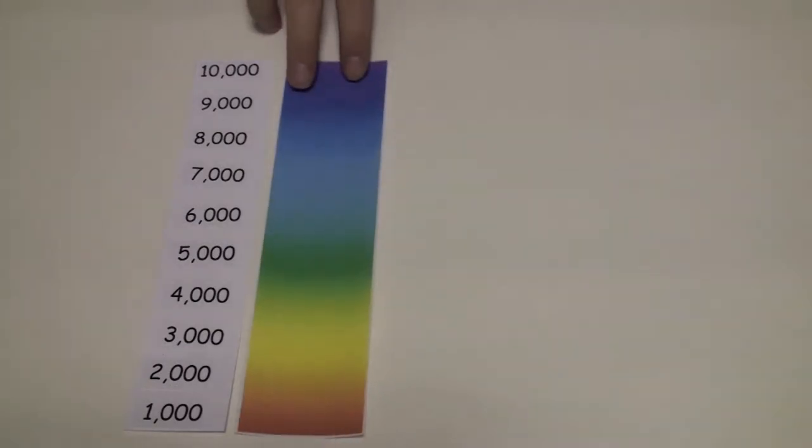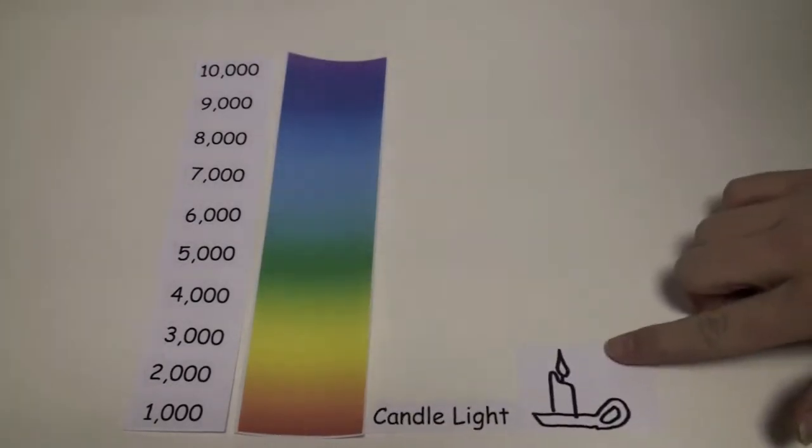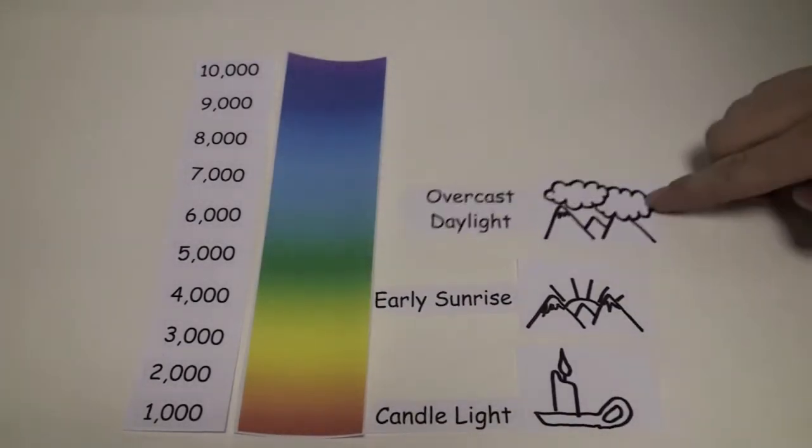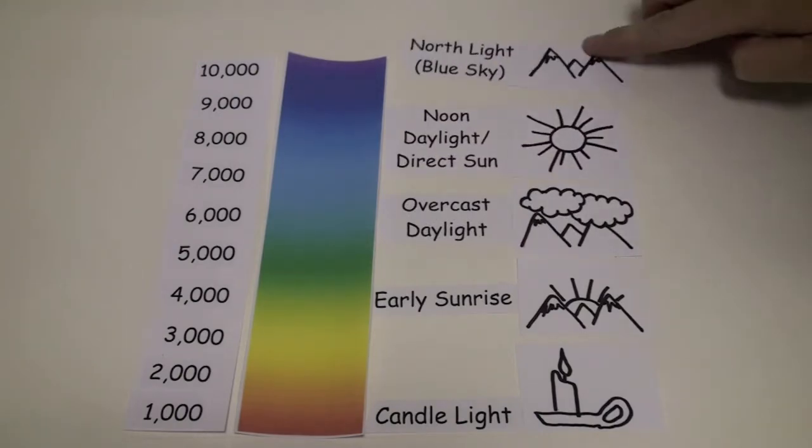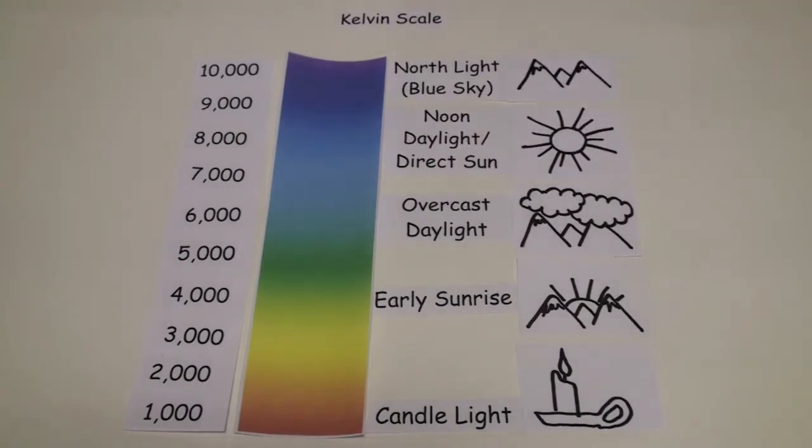Kelvin temperature is a numerical measurement that describes the color appearance of the light produced by the lamp and the color appearance of the light itself, expressed on the Kelvin scale.